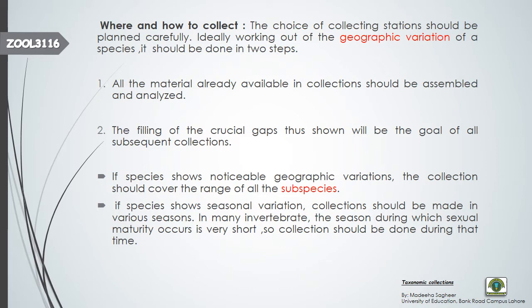After studying pre-assembled collections, a taxonomist identifies gaps and then collects specimens to fill those crucial gaps. If species show noticeable geographic variation, the collection should cover the range of all subspecies — the rank that comes under species in taxonomy. Your collection should be wide enough to fill gaps and cover the range of all subspecies.